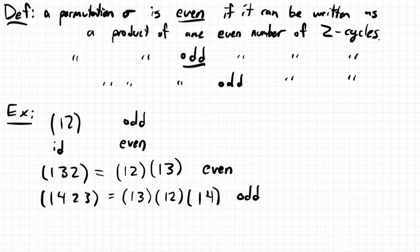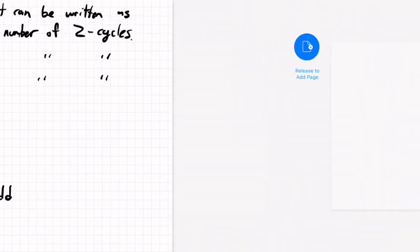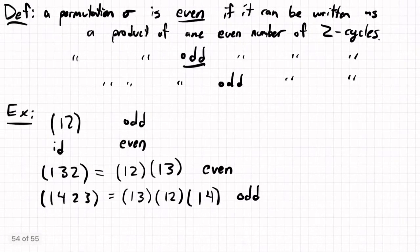And so the thing to know about even and odd permutations is that there's this theorem: any permutation is either even or odd because we can always write it as a product of two-cycles, and there will be a certain number of those two-cycles, which will be either even or odd.